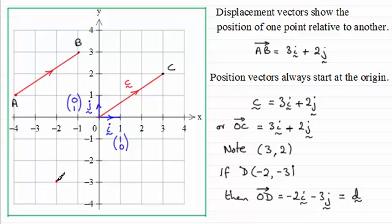So that there would be our vector which we could call d, and this point here would be the point D with coordinates (-2, -3).